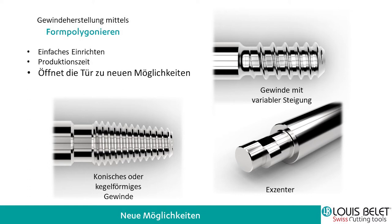Man könnte sich auch eine Schraube mit variabler Steigung vorstellen – hier haben wir etwas übertrieben, die Steigung hinten ist bei 1,2 und endet bei 0,6. Das ist ebenfalls möglich, egal was für eine Steigungsänderung Sie auf Ihrem Gewinde haben. Wenn wir das Profil oder die Steigungsänderung von Ihnen haben, können wir den Fräser – das Gegenstück – schleifen und herstellen. Auch ein Exzenter mit dieser Technologie ist machbar; das haben wir ebenfalls überprüft. Man würde ebenso das Gegenstück auf dem Fräser schleifen und mit dieser Eintauchoperation den Exzenter erhalten.